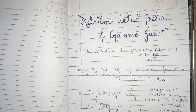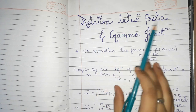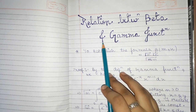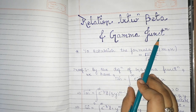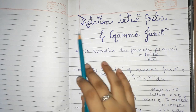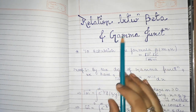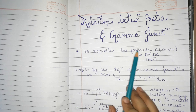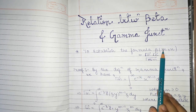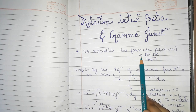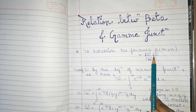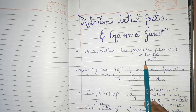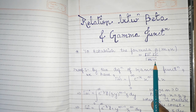Hi friends, in this video we will discuss the relation between Beta and Gamma functions. The question comes in the form: derive the relation between Beta and Gamma functions, or establish the formula that Beta(m,n) is equal to Gamma(m) times Gamma(n) divided by Gamma(m+n).